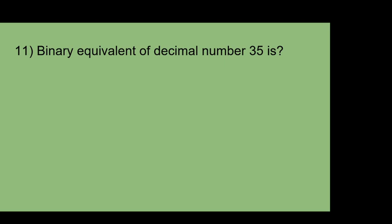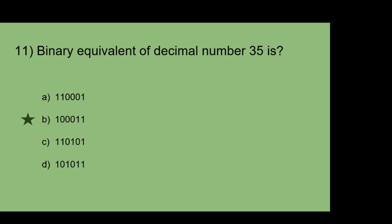Binary equivalent of decimal number 35 is: A: 110001. B: 10011. C: 110101. D: 101011. The answer is B. To calculate, divide 35 by 2 repeatedly until the remainder is 1, then write down the remainders from MSB to LSB.